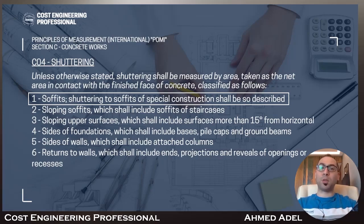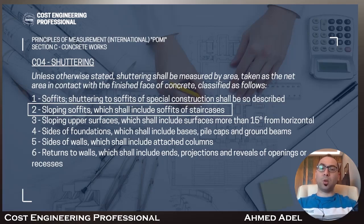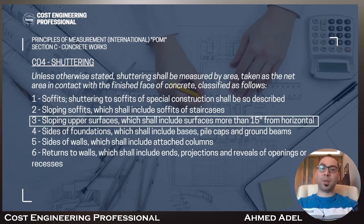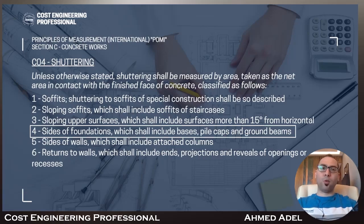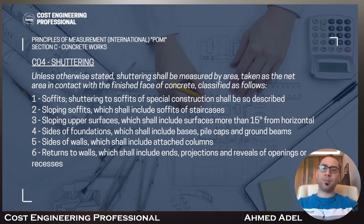Number two: sloping soffits, which shall include soffits of staircases. Number three: sloping upper surfaces, which shall include surfaces inclined more than 15 degrees from horizontal. Points two and three are both related to sloping soffits — point two is the soffit of a staircase, and point three is the soffit of any surface inclined more than 15 degrees from horizontal. Number four: sides of foundations, which shall include bases, pile caps, and ground beams.